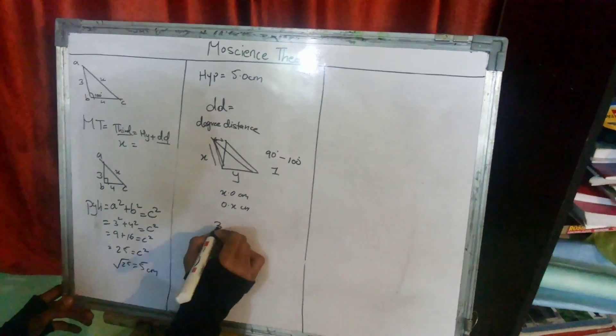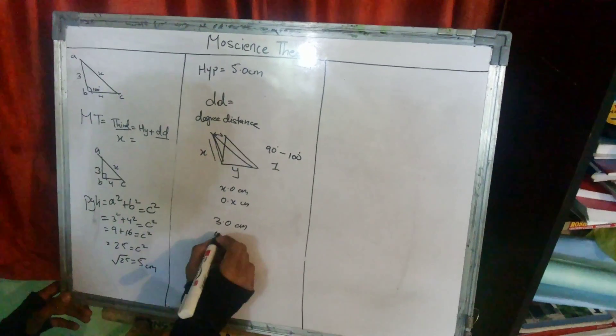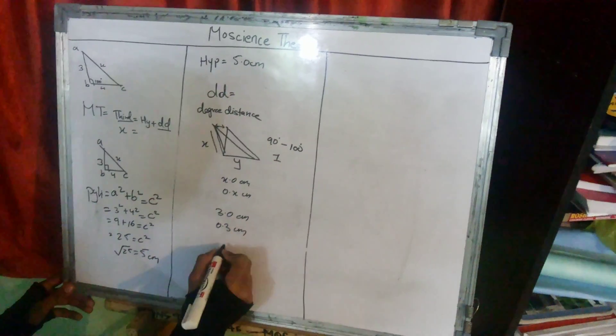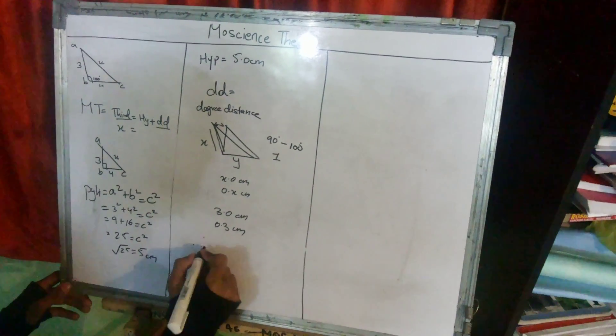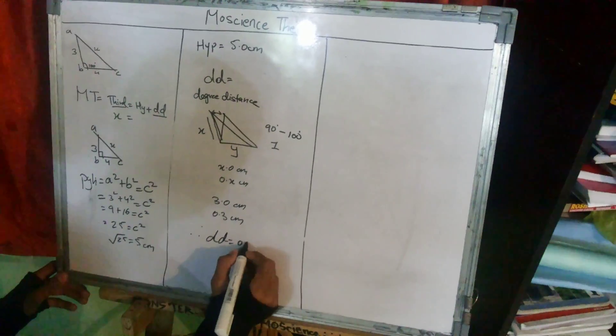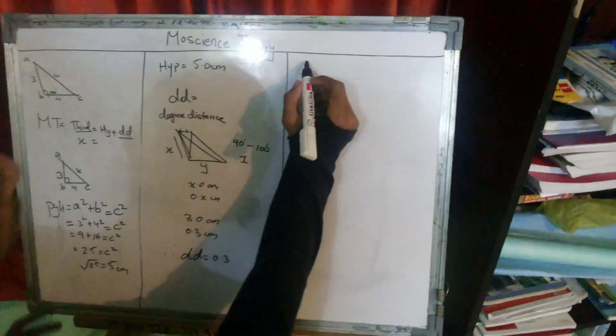First side is 3.0 centimeter, therefore degree distance is equal to 0.3 centimeter. Formula put: